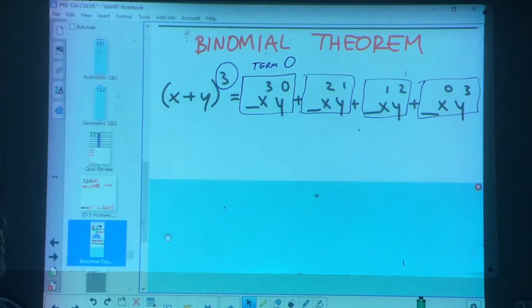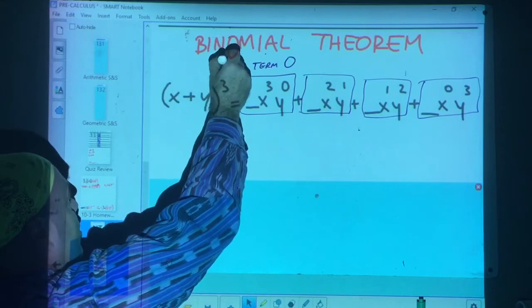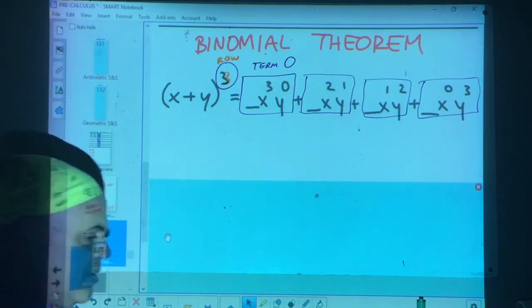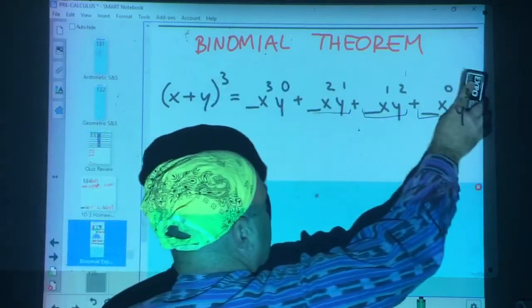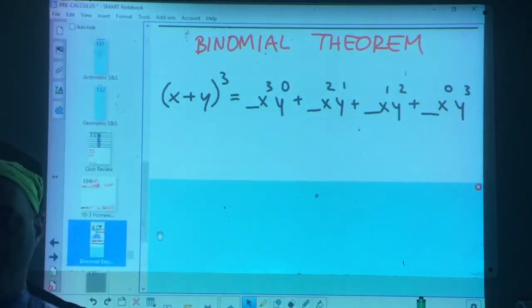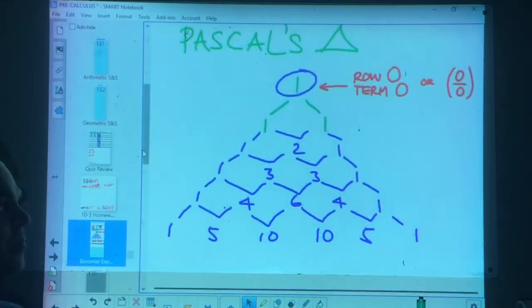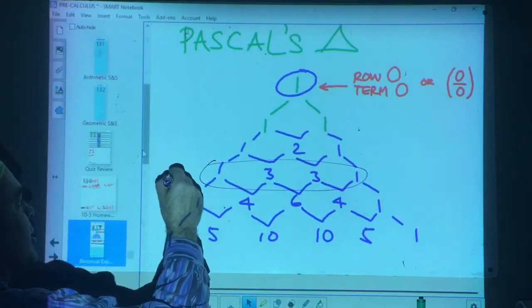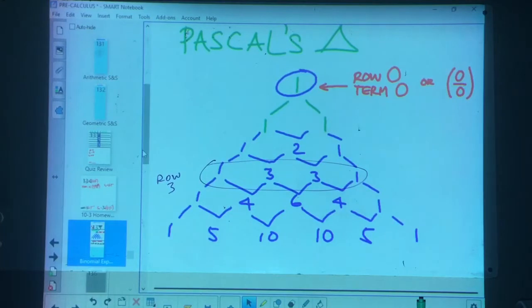Here we have term zero. What did we say? We're going to take x and start it at the highest exponent and y started at the bottom. And then look what happens. Just as I told you, the x's go down, the y's go up. And what do the exponents always add up to? Three. Now the last thing we've got to do is fill in those blanks. Well, we could use Pascal's triangle. Where are we going to go? We're going to go to row three. And take a look. How many numbers do we need? One, two, three, four. So when we go back to row three, let's find it. Row zero, one, two, three. And what do you notice? How many numbers are in row three? Four of them.